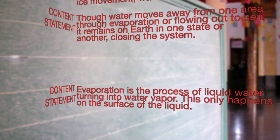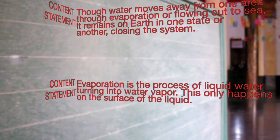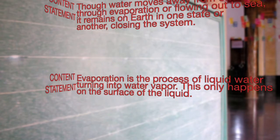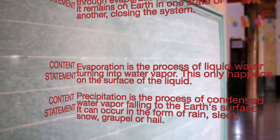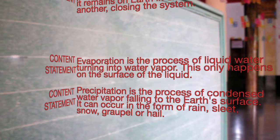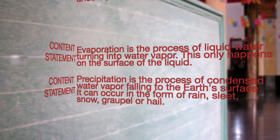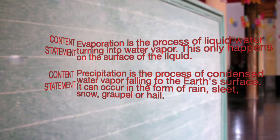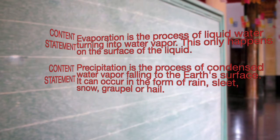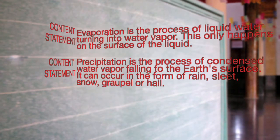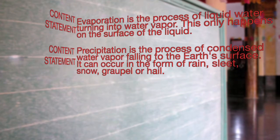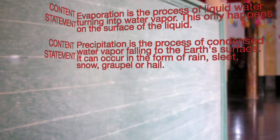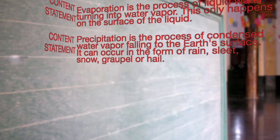Evaporation is the process of liquid water turning into water vapor; this only happens on the surface of the liquid. Precipitation is the process of condensed water vapor falling to the earth's surface — it can occur in the form of rain, sleet, snow, graupel, or hail.